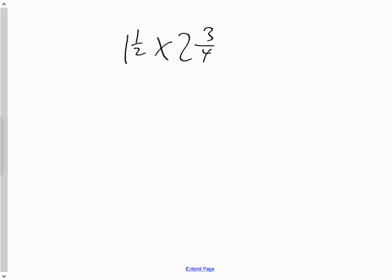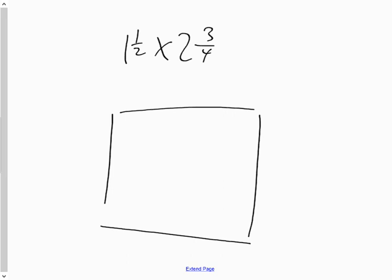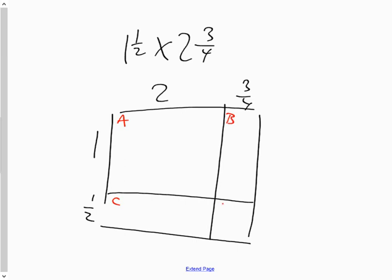So for the last question, we have a mixed fraction times a mixed fraction. And when we have mixed fractions in our product, we're going to use an area model. This will be two and three quarters. This will be one and one half. Here we have four composite areas that make up the entire area. What's the length and width of A? Two times one. What's the length and width of B? One times three quarters or three quarters times one. The length of C? One half doubled. And the length of E is one half times three quarters.